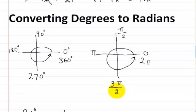3 pi over 2 is exactly the same thing as 270 degrees, because if you start here and go all the way around to here, that's 3 pi over 2 radians. Same thing over here: if you start from 0 and go all the way this way, that would be 270 degrees.